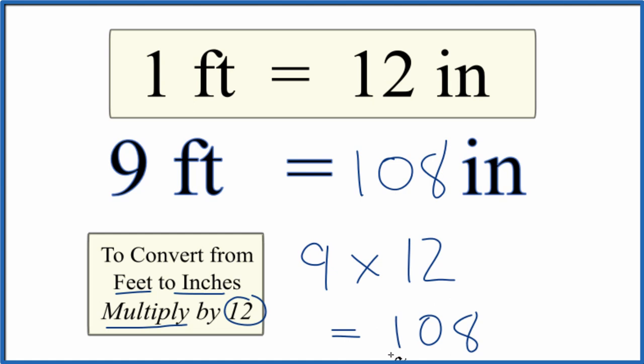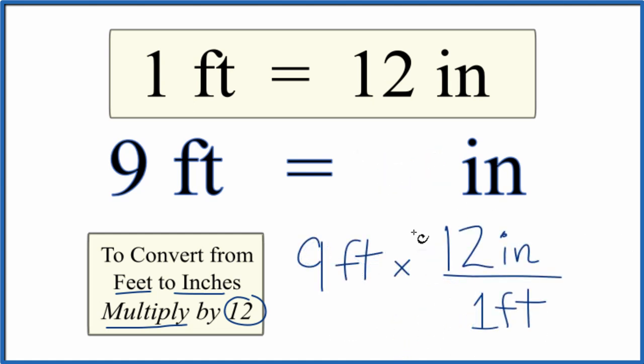Let's do this again with the units written in. We have our 9 feet, we multiply that by 12, and that's 12 inches. There are 12 inches in 1 foot. So we have 12 inches per foot here.